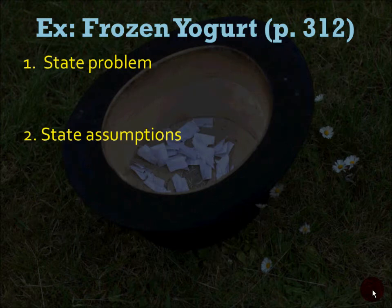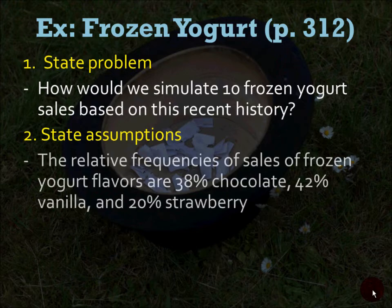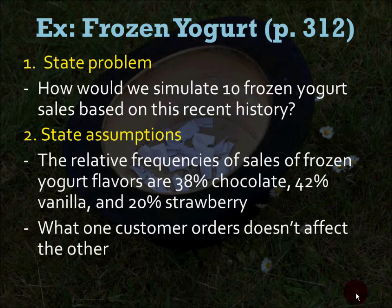First, state the problem: we want to simulate 10 frozen yogurt sales based on this recent history. Second, state the assumptions: the relative frequencies of sales are listed and we're going to use these as the basis of percentages for our simulation. We assume that these represent all frozen yogurt customers, and that what one customer orders does not affect the other — that's independence. Just because you walk in and get vanilla doesn't mean the next person's choice is influenced.